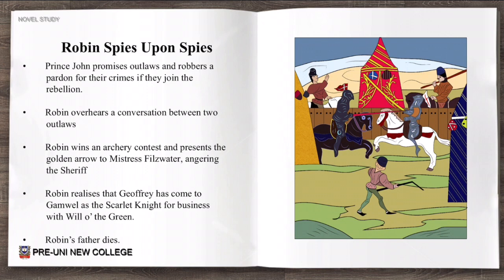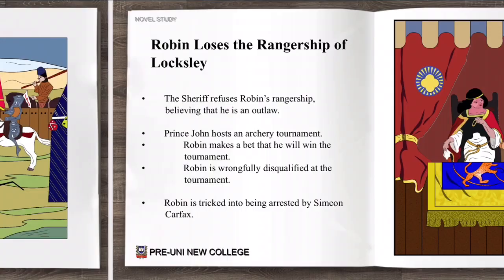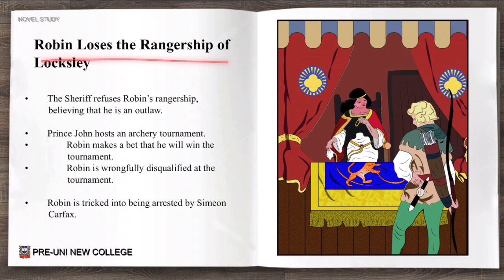Unfortunately, Robin's father dies as well. Next, Robin loses the rangership of Loxley. The sheriff refuses Robin's rangership, believing that he's an outlaw, and bans Robin from being the ranger.